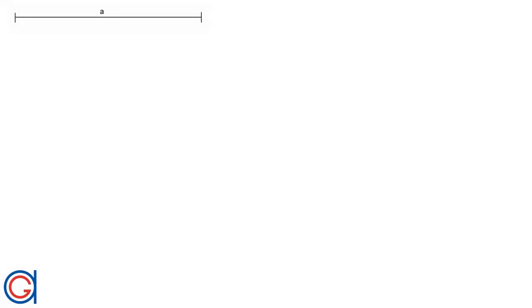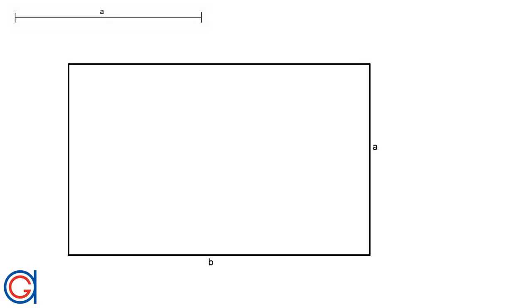Hello, today we are going to learn how to draw a golden rectangle given the length of its shorter side, the line segment A which can be seen here on the top left hand side of the screen.